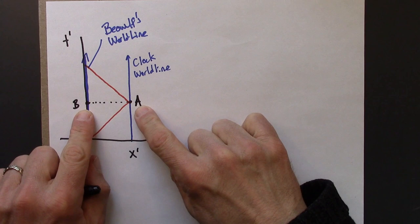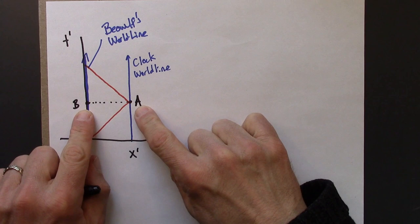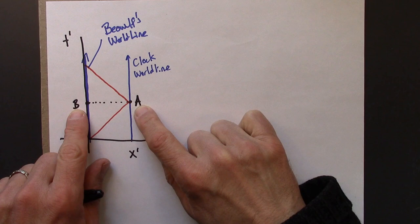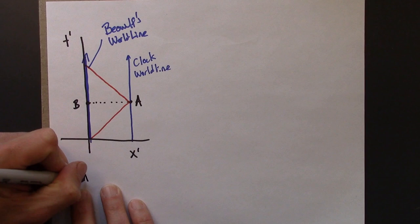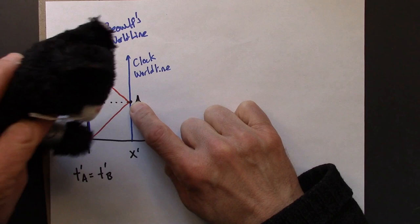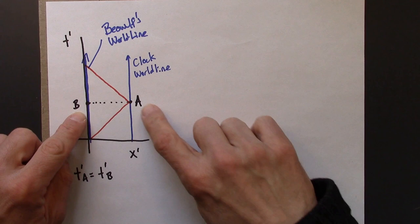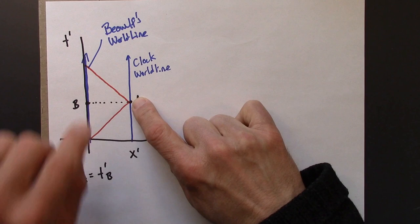So the time according to Beowulf at which these two events occur, we can see on the spacetime diagram, is the same. So I'll write this here: T prime A is T prime B. So A would be, I guess the moment that Beowulf's watch reaches, is at the midpoint of this. And then A is when the light clicks, the light bounces off the clock.